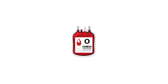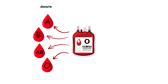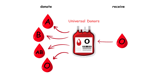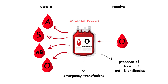People with type O blood can donate to any ABO blood type, including A, B, AB, and O, making them universal donors, as their red blood cells do not have antigens that would trigger an immune response in recipients. However, they can only receive blood from other type O individuals due to the presence of anti-A and anti-B antibodies, which would attack any other type's antigens. This makes type O blood crucial in emergency transfusions.